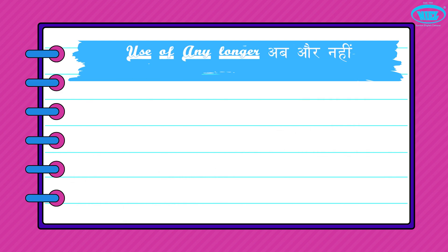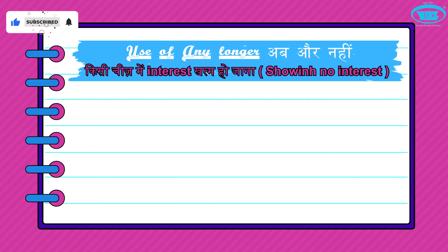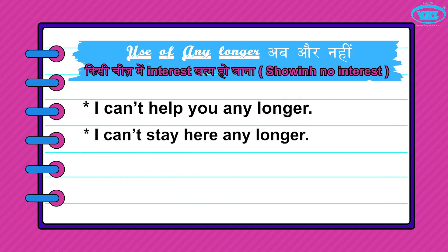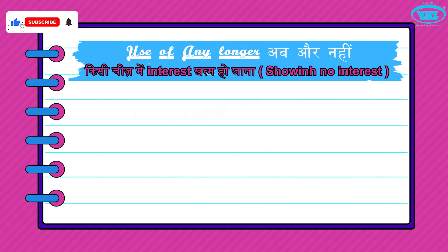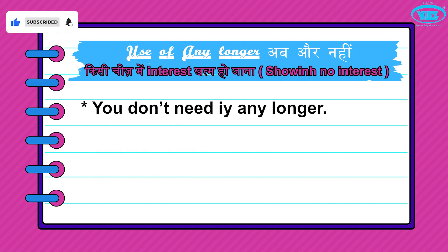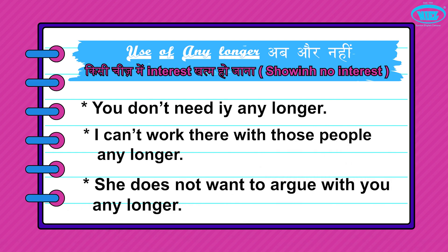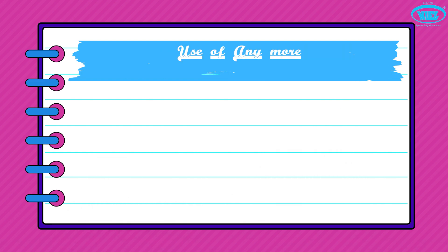The next pattern is 'any longer', which means showing no interest. For example: I can't help you any longer. I can't stay here any longer. I don't want to wait any longer. You don't need it any longer. I can't work there with those people any longer. She does not want to argue with you any longer.